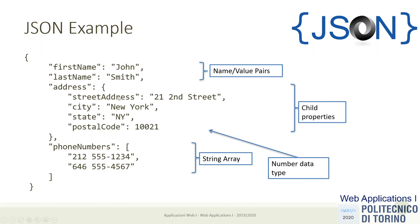For example, in JSON a resource describing a person would be represented as an object — braces mean object. This object has four properties: firstName, lastName, address, and phoneNumbers. firstName and lastName are strings with values 'John' and 'Smith'. The address is an object nested inside — a sub-property that itself has properties. phoneNumbers is an array of strings with two values.